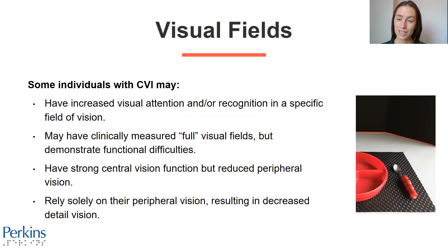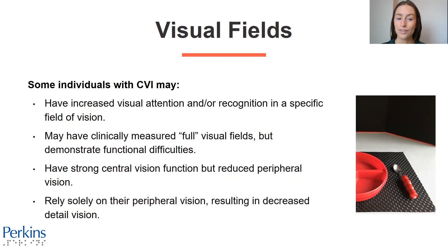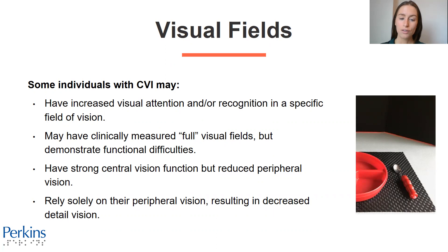Here we have an image of a table with a black mat. On the black mat is a silver spoon with a red handle next to a red plate; in front of this is a black trifold board. Some individuals with CVI may have increased visual attention and/or recognition in a specific visual field. They may have clinically measured full visual fields but demonstrate functional difficulties. They may have strong central vision function but reduced peripheral vision, or they may rely solely on their peripheral vision, resulting in decreased detail vision.